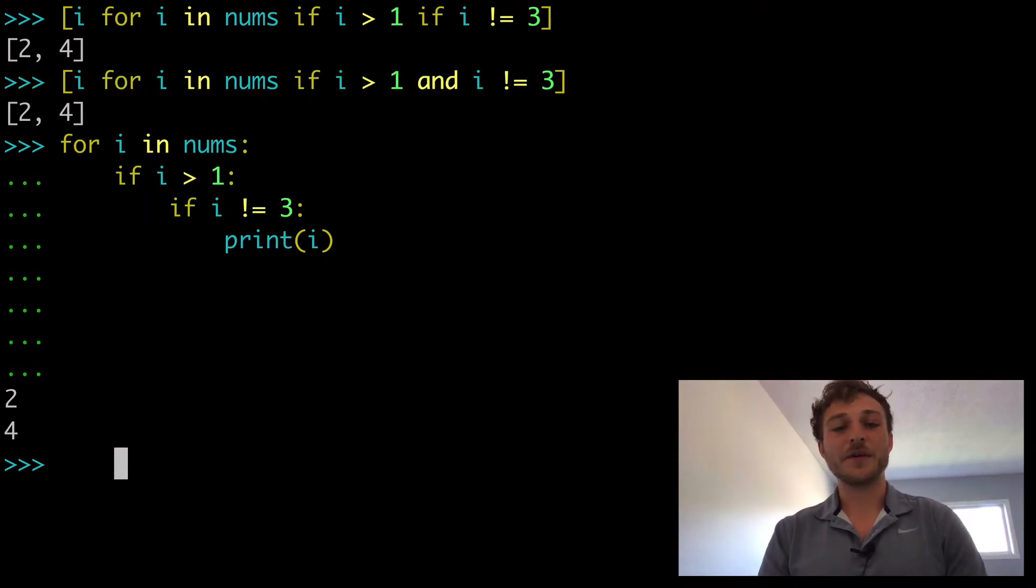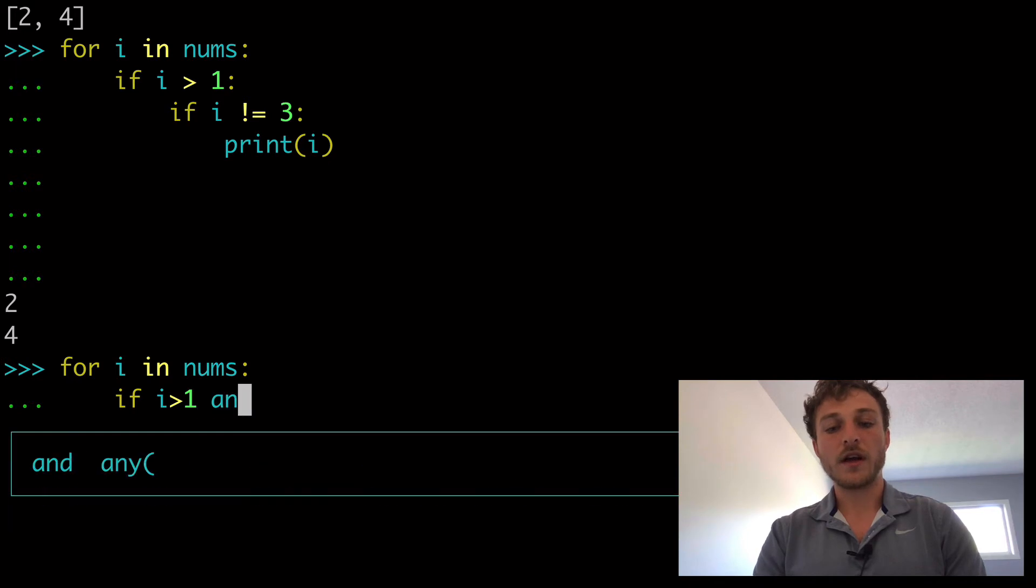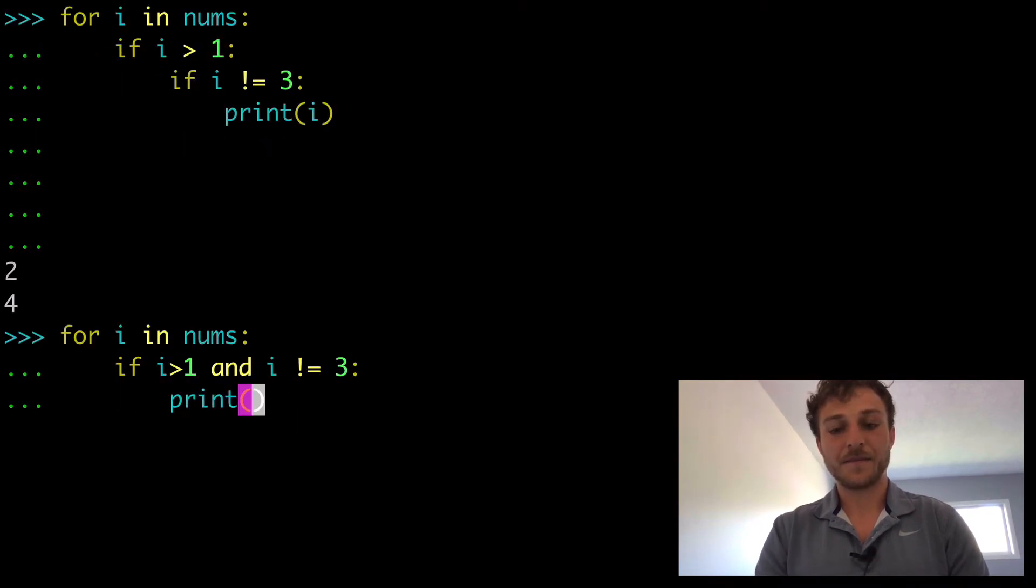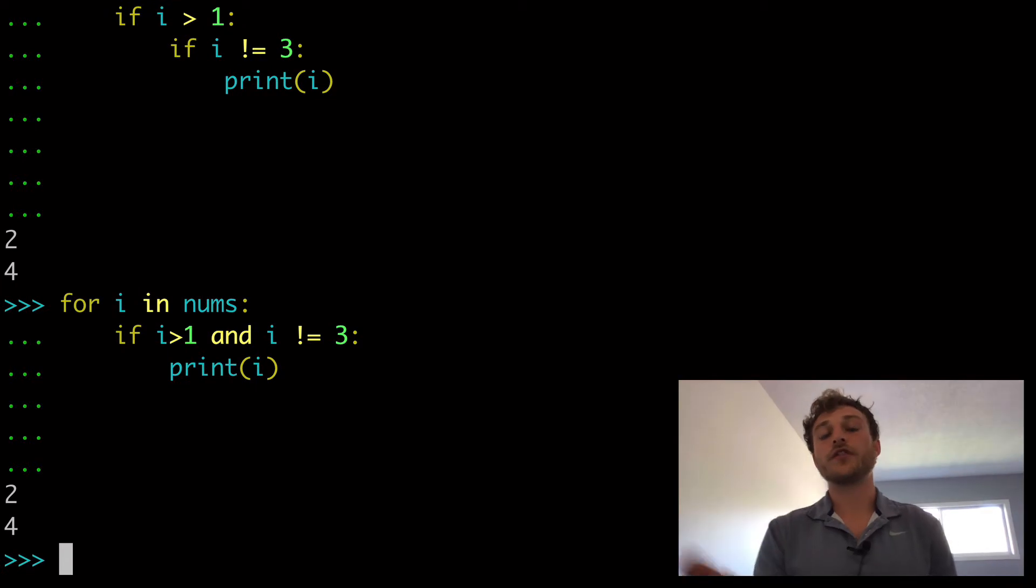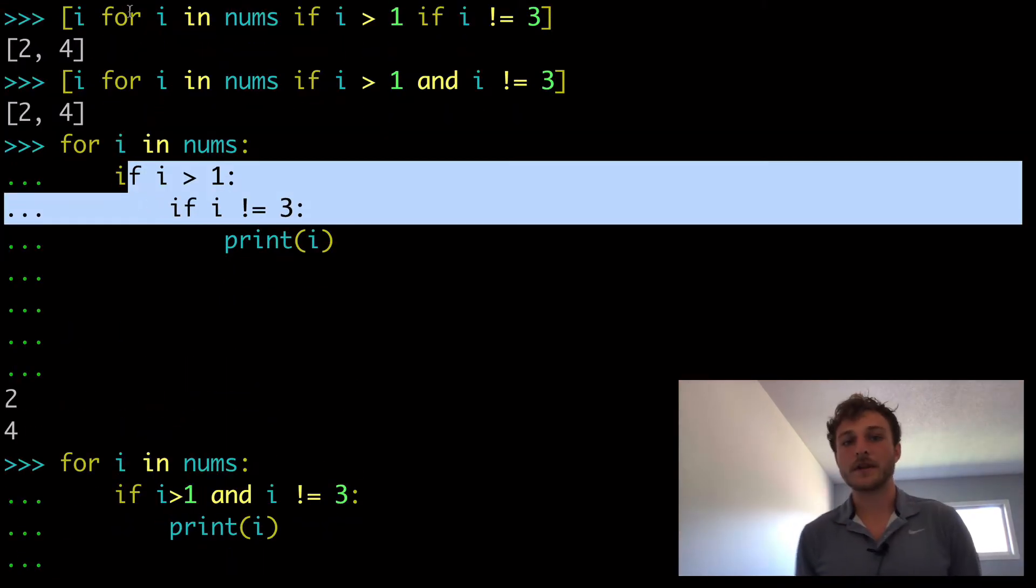And then this second one here, this and, you probably know the answer already, which is that that would look something like this. It would look like a one liner if i greater than 1 and i does not equal 3. And then we can print that out. And so in this case, we're returning 2 and 4. They're kind of the output is equivalent. But of course, now that you see the distinction between having it on one line versus having it on two lines, you can see how as we get a little bit more complicated, that difference is going to start to matter a little more.